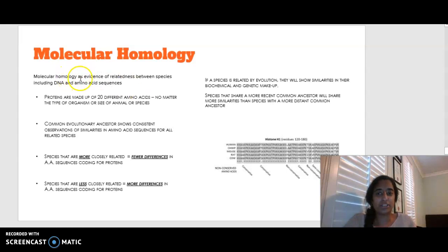So molecular homology as evidence of relatedness between species includes DNA and amino acid sequences. We know that proteins are made up of 20 different amino acids. No matter what organism you are, no matter how big you are, no matter the size of that particular animal or the species, those amino acids are coding to produce particular proteins. That's why we say that the amino acid coding is universal.